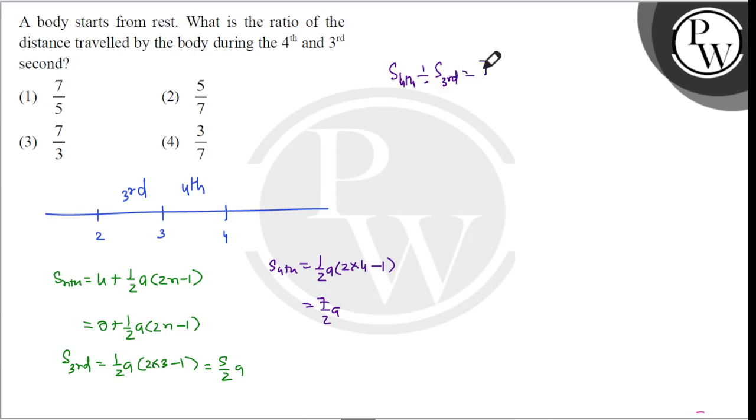S 4th is 7 by 2a. So the ratio is 7 by 5. The answer is option B. I hope you understood the solution. Thank you.